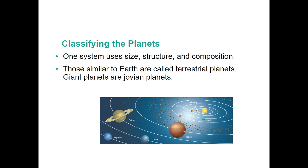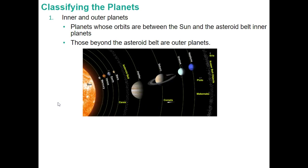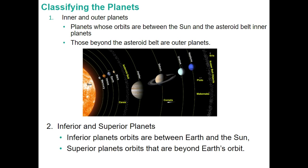A planet has to be a certain size, structure, and composition. The eight planets that revolve around the sun are Mercury, Venus, Earth, Mars, Jupiter, Saturn, Uranus, and Neptune. Planets are also classified by location: inner planets are anything inside the asteroid belt, and outer planets are anything outside it. Inferior planets have orbits between the Earth and the sun — that's only Mercury and Venus. Superior planets are everything outside Earth's orbit, from Mars to Neptune.